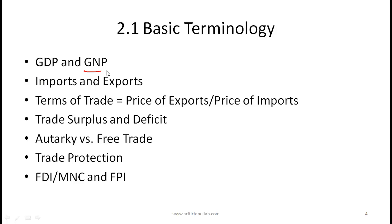GNP, gross national product, also takes into account the income that the nationals of your country have abroad. So it is a national number rather than purely geographical — it isn't necessarily bounded by geography. For example, Pakistanis working abroad or businesses abroad: those incomes are also counted in GNP. Imports and exports everyone here knows. Terms of trade you've probably heard, but most people probably don't know the exact definition.